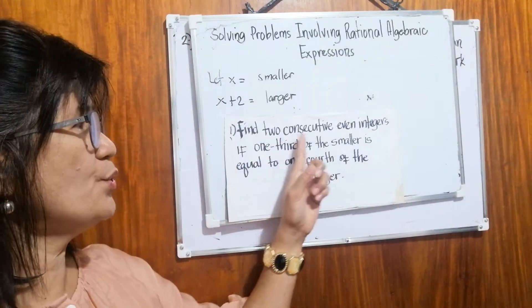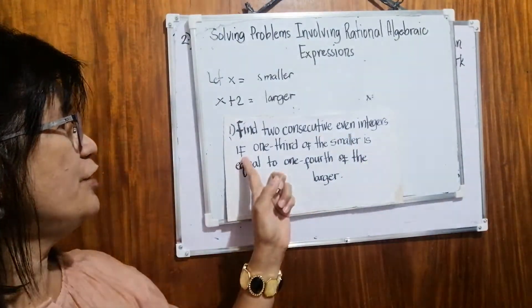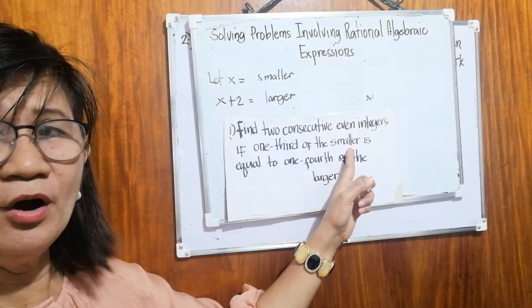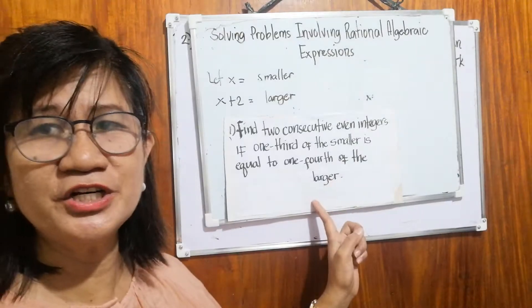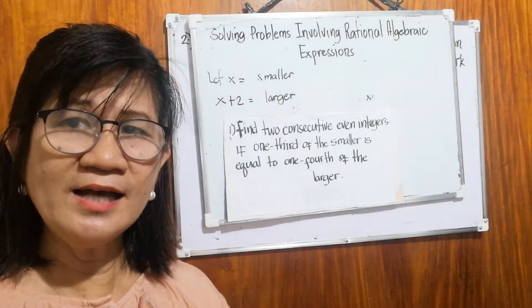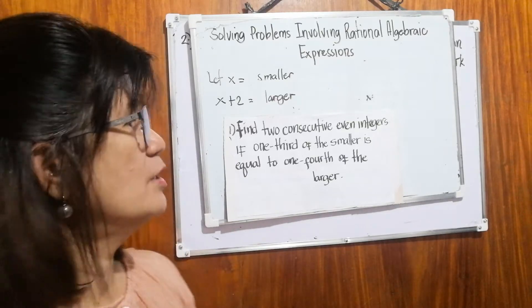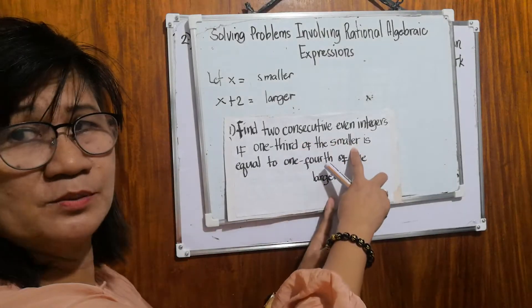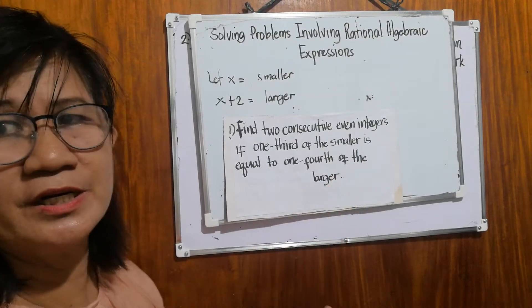The first example here is: find two consecutive even integers if one-third of the smaller is equal to one-fourth of the larger. Again, we are asked to find the two consecutive even integers so that one-third of the smaller is equal to one-fourth of the larger.